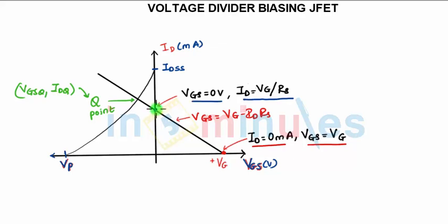Coming to the graph, for VGS to be 0, I am getting ID equal to VG by RS. That is this point. So I have got two points. Joining the two points I will get a straight line which has a slope and has the equation VGS equals VG minus ID into RS.